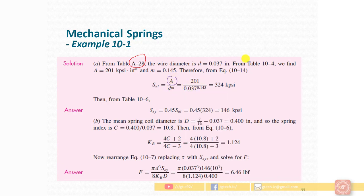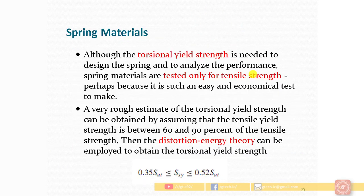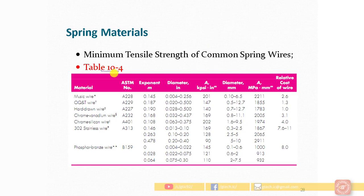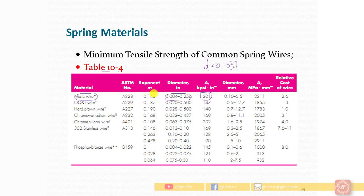Now we need the values of A and M from table number 10/4. In table 10/4, the material column shows music wire. Our wire diameter of 0.037 inches falls within the given diameter range. Correspondingly, for KPSI units, the value of A is 201 and M is 0.145.